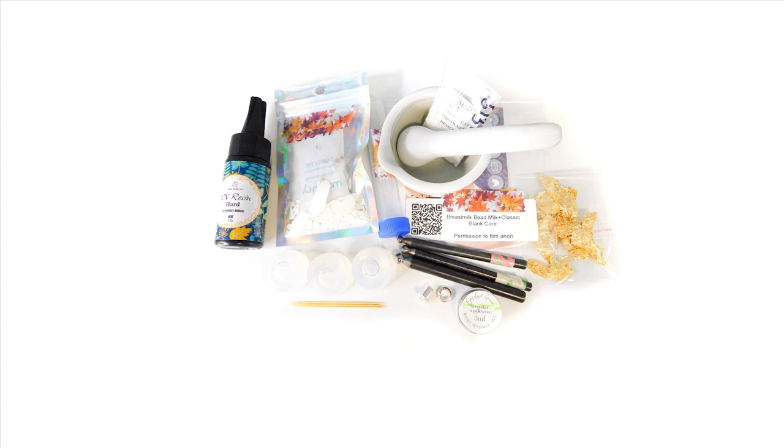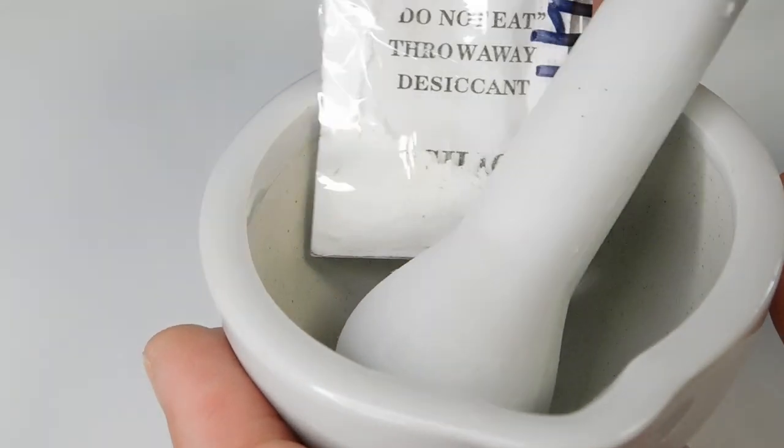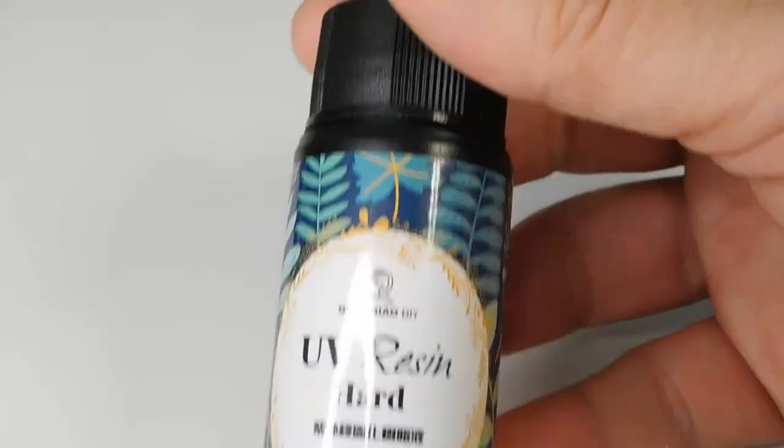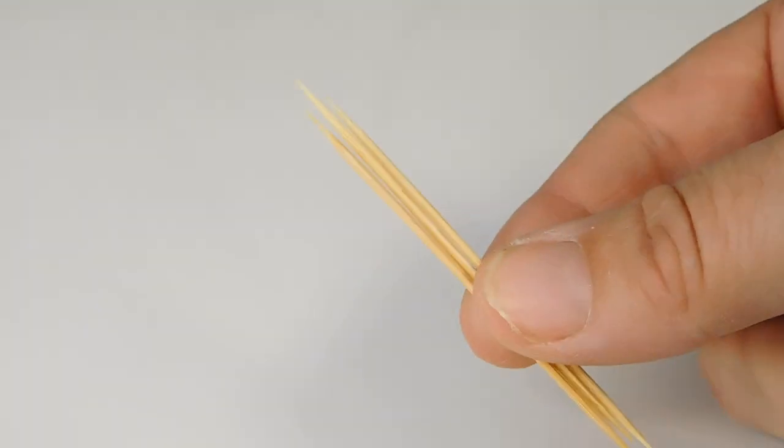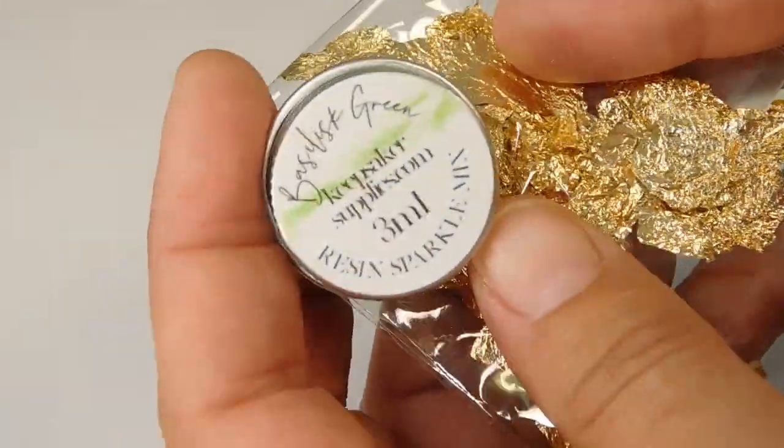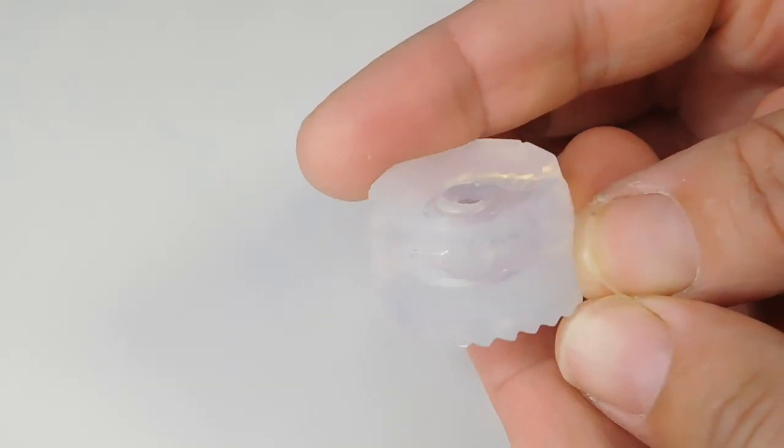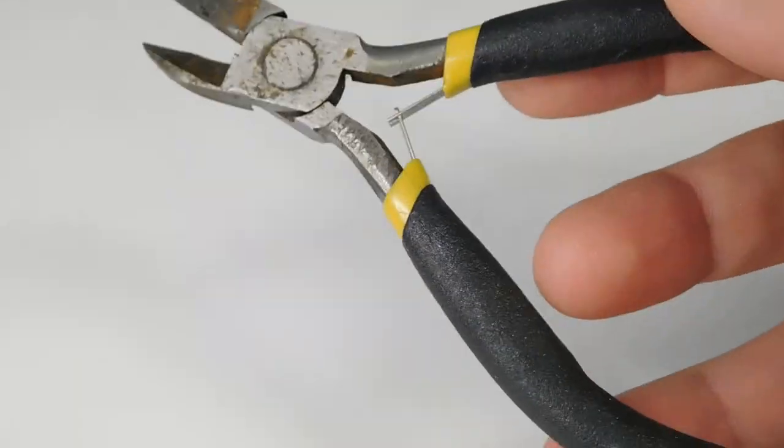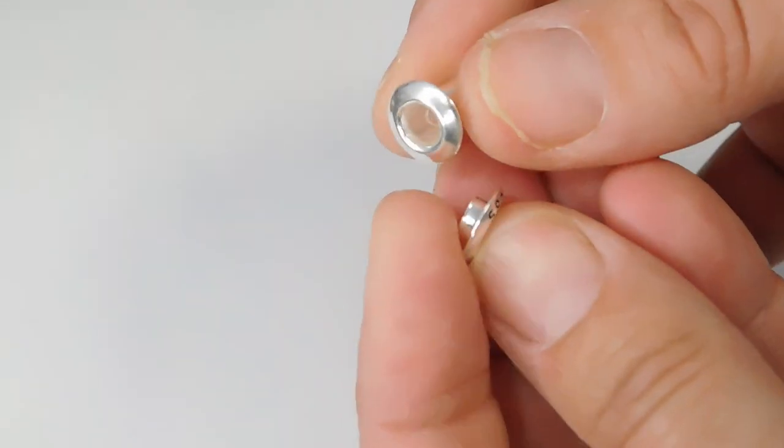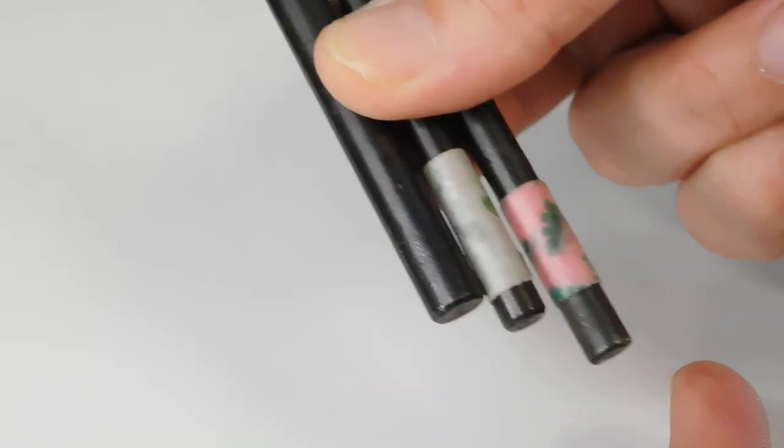You'll need your client's breastmilk finely ground in a white personal mortar, UV resin, vinyl gloves, label backing paper, a tiny spoon, cocktail sticks, any sparkles you like, a medium bead mould, side cutting pliers, a part A and B bead core and a set of doming punches.